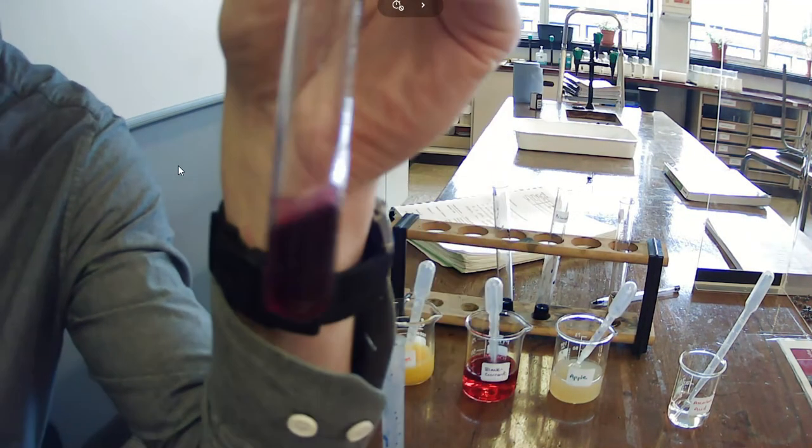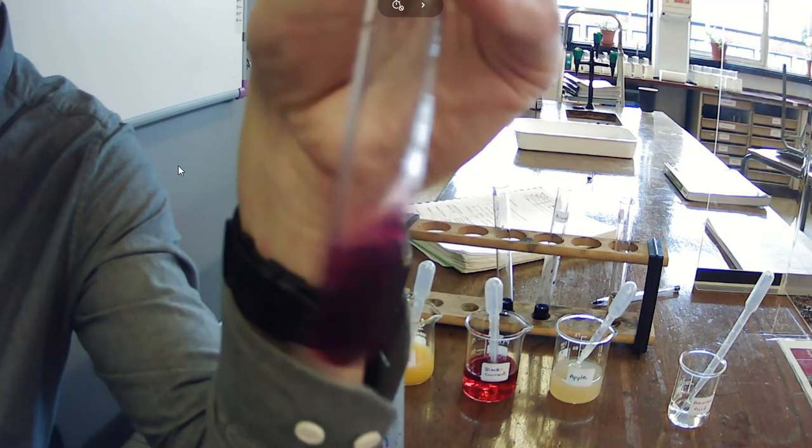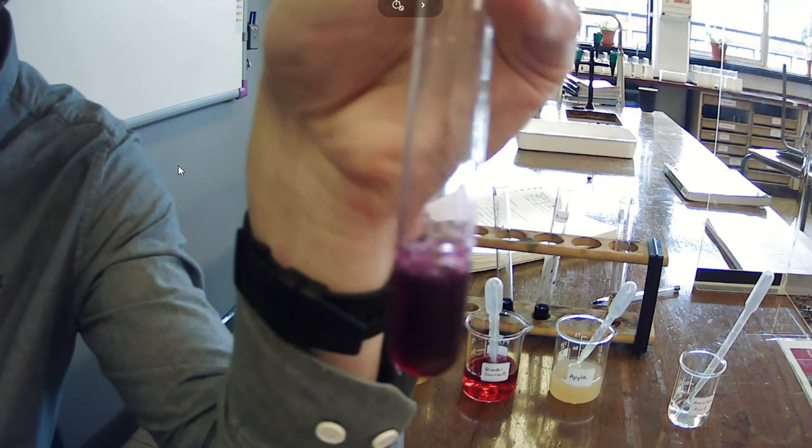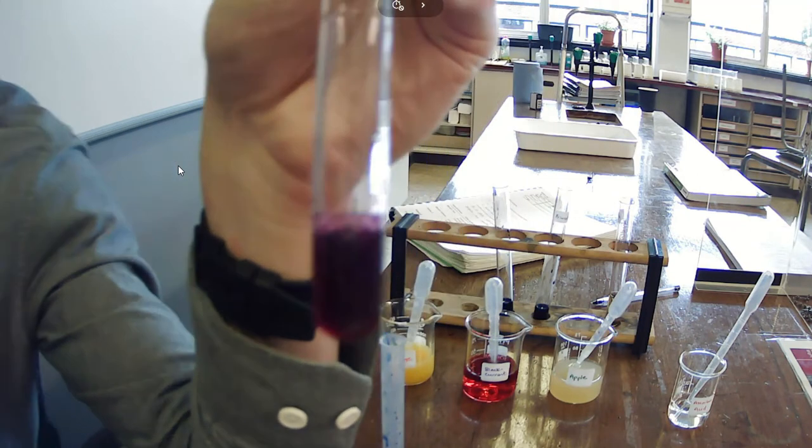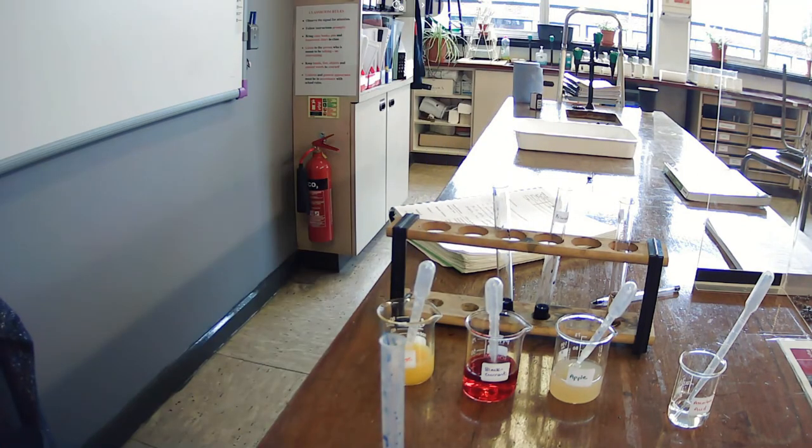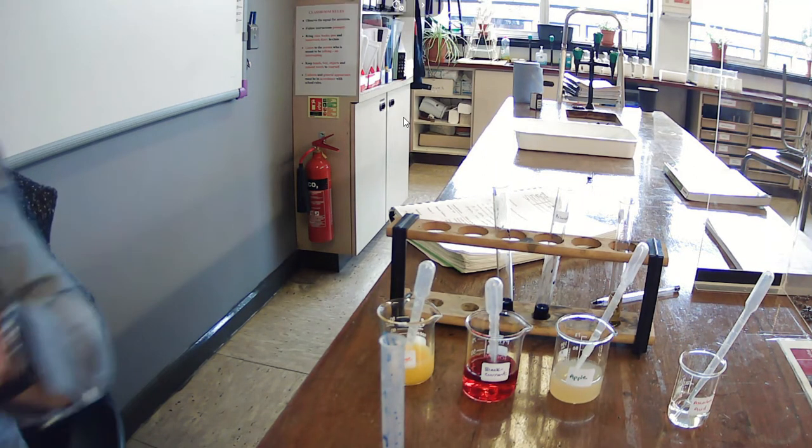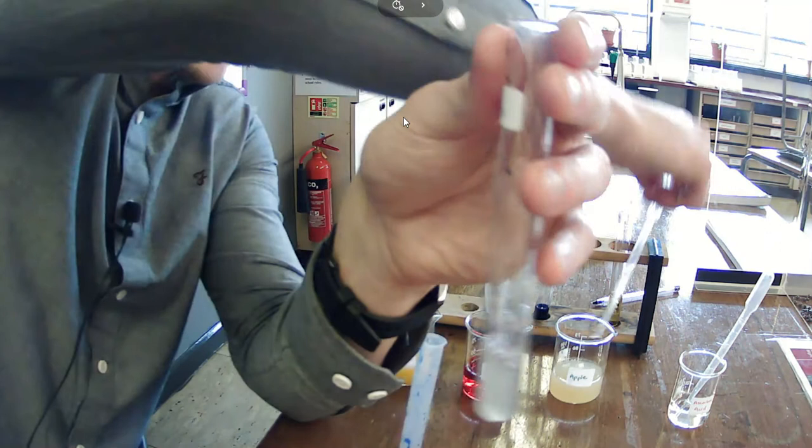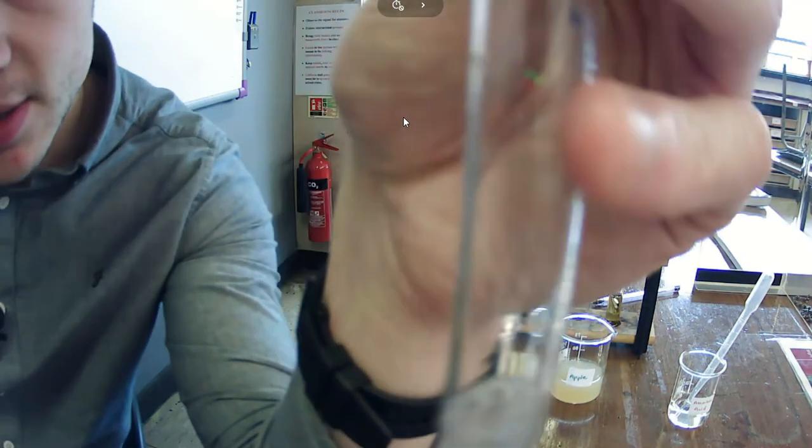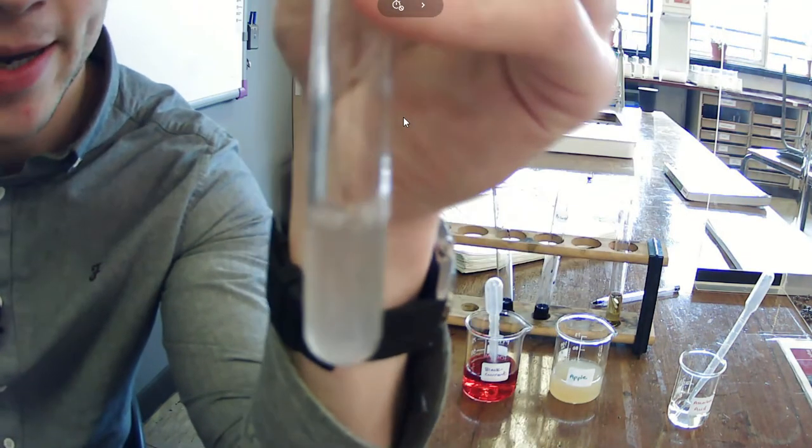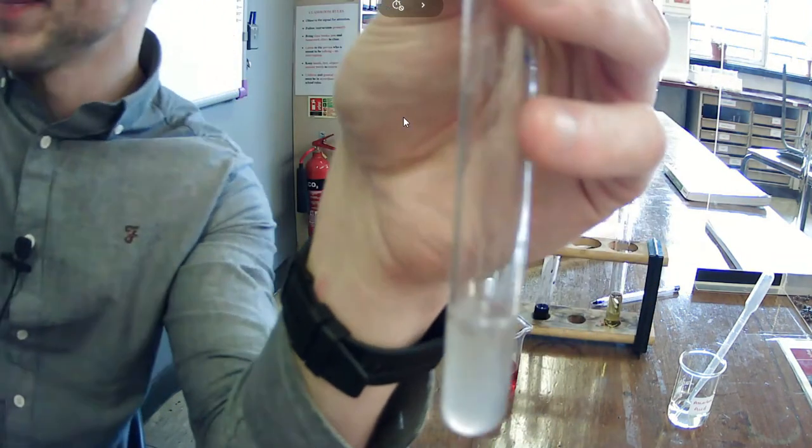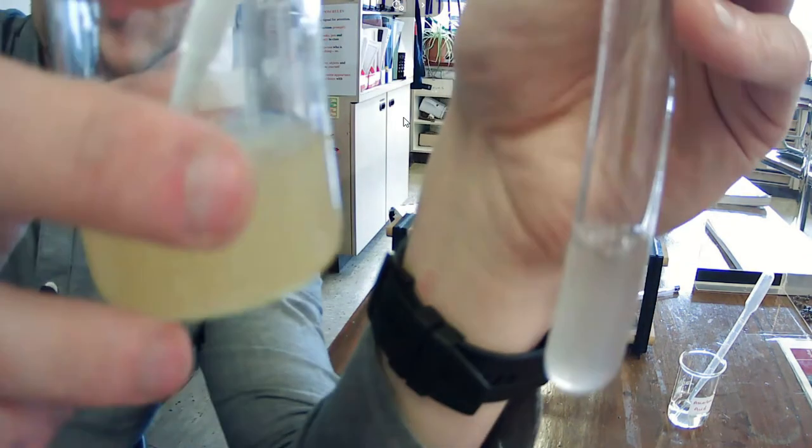So here we have apple juice after 20 drops. So unlike the ascorbic acid, it is not clear yet. And I've just added 40 drops to this and it has just gone now the color of apple juice.